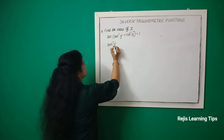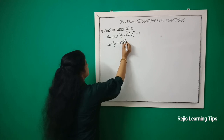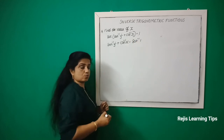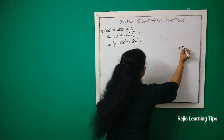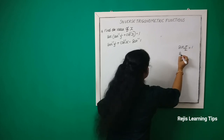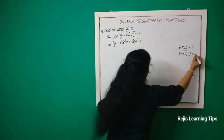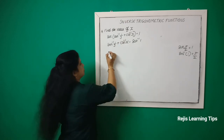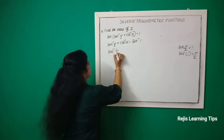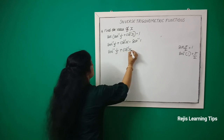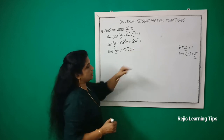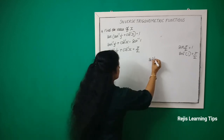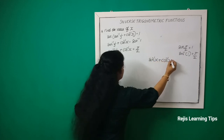sin⁻¹(1/5) + cos⁻¹x = sin⁻¹(1). Now, sin(π/2) = 1, therefore sin⁻¹(1) = π/2. So sin⁻¹(1/5) + cos⁻¹x = π/2.